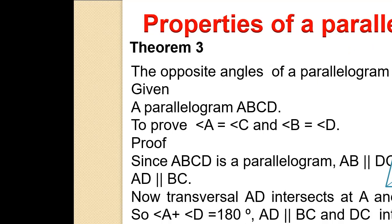Theorem 3: The opposite angles of a parallelogram are equal. Given parallelogram ABCD, to prove Angle A equals Angle C and Angle B equals Angle D. Proof. Since ABCD is a parallelogram, AB is parallel to DC and AD is parallel to BC. Transversal AD intersects at A and D respectively, so Angle A plus Angle D equals 180 degrees.